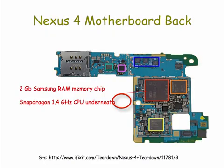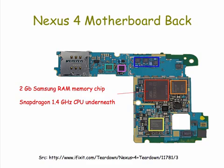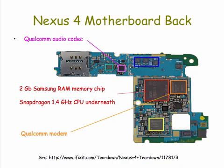If you opened up your Nexus phone, you'd find a similar motherboard. Pointed out here is the two gigabyte memory chip. Two gigabytes is two billion bytes — that's about two billion characters. Underneath it, which you can't see directly, is the central processing unit. But there are other chips on this motherboard as well. For example, the one outlined in purple here is the audio chip. This controls the sound component when you tell it to play a speech by Martin Luther King.